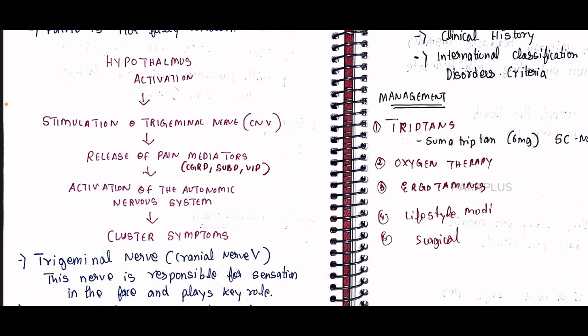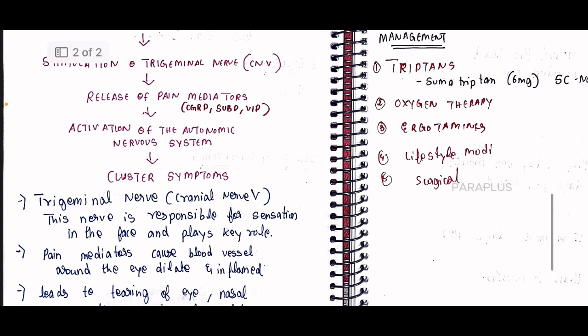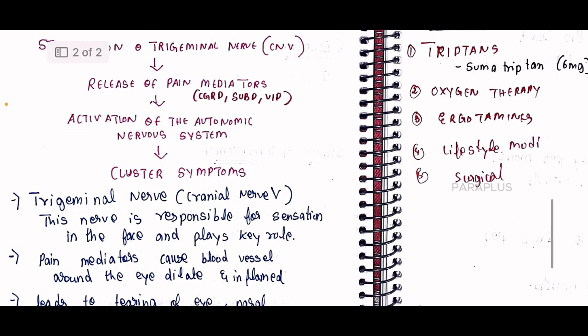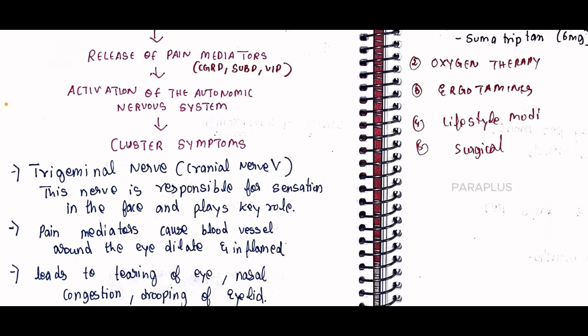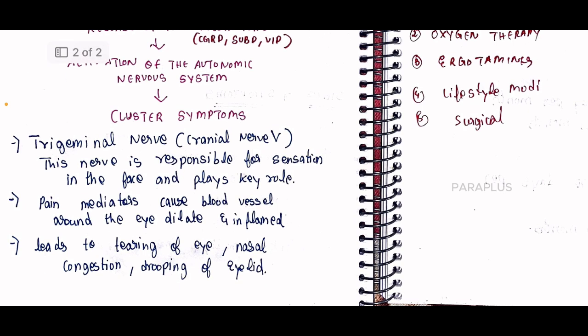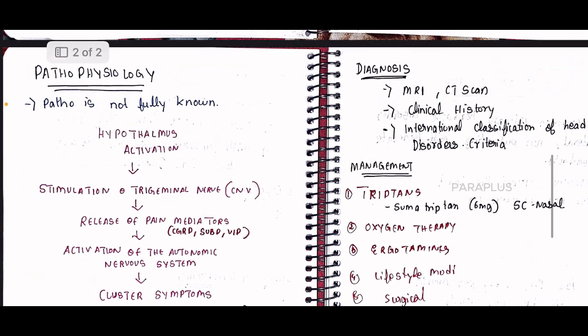These pain mediators cause blood vessels around the eyelid to become inflamed and dilated. The trigeminal nerve, cranial nerve 5, is responsible for sensation in the face and plays a key role here. The resulting inflammation leads to tearing of the eye, nasal congestion, and drooping of the eyelid — explaining the cluster headache symptoms.